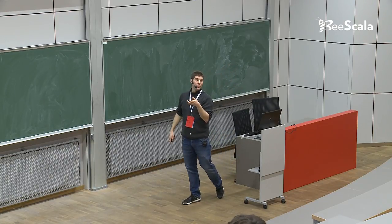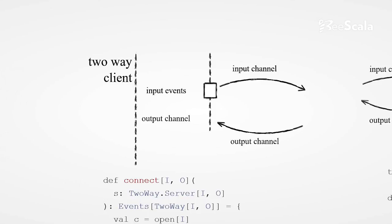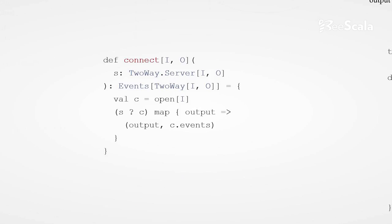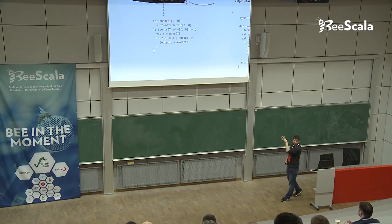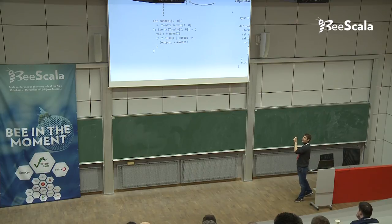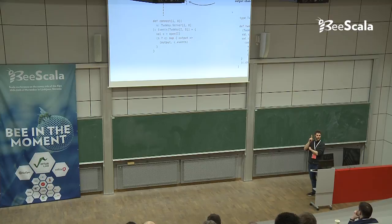On the client side, use a connect method which, given a two-way server, creates an input channel, sends it to the server, and maps the reply back into a TwoWay tuple. You get back an event stream of two-way connections — in this case it will return exactly one connection. That's two-way communication.